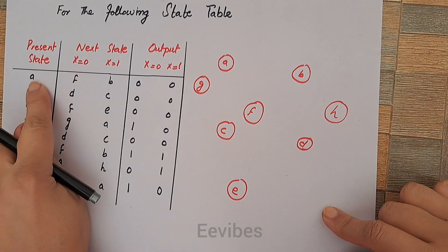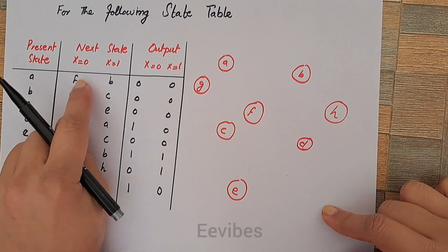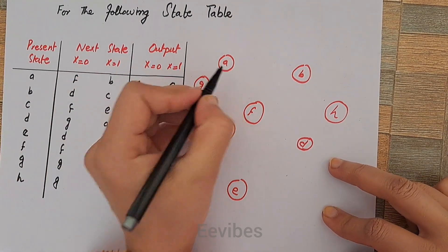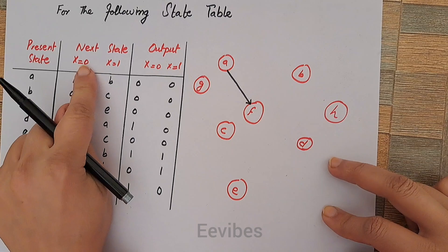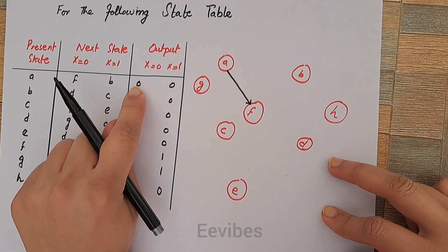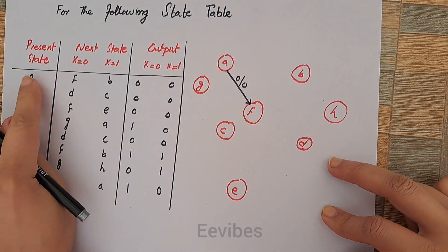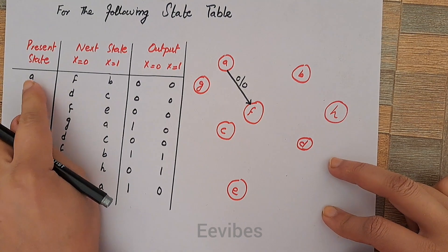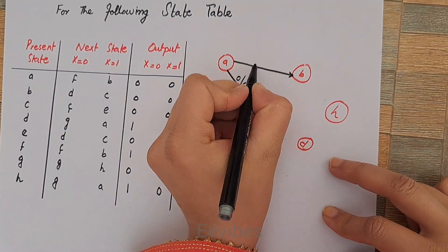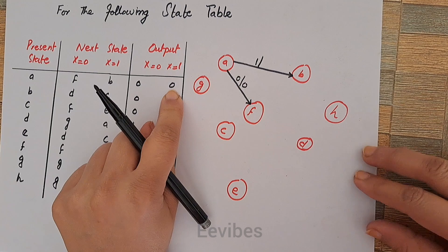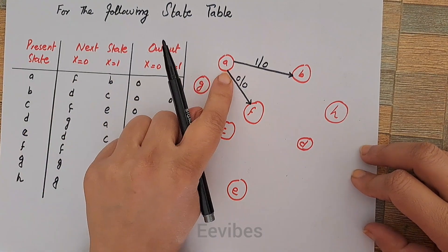Starting from present state A: you are going into the next state F corresponding to input X equals 0, so I will draw an arrow from A to F. When input equals 0, output is also equal to 0 — I will write input slash output. When input equals 1, you are going from A to B and producing output equal to 0. So I have drawn both next states for present state A.